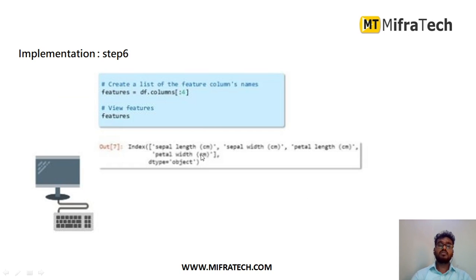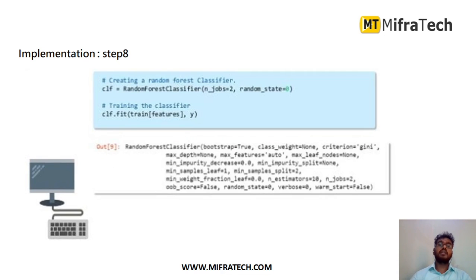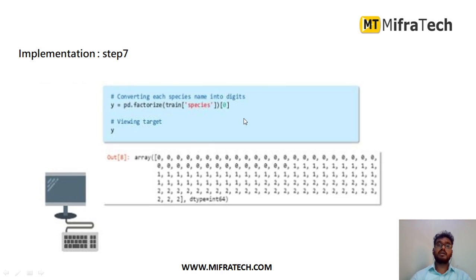We extract the features by assigning `df.columns` to a features variable. Printing features shows the four columns: sepal length, sepal width, petal length, and petal width. Since string or character values like species names cannot be directly applied to machine learning algorithms, we need to convert them to numerical values using factorizing. We map setosa, virginica, and versicolor to 0, 1, and 2 respectively. This factorized output is taken as the Y target column.